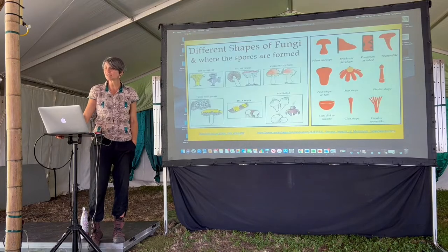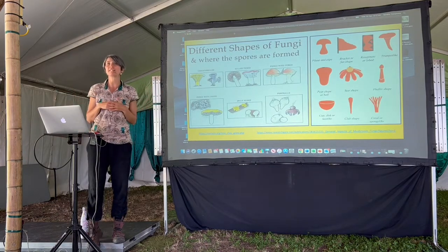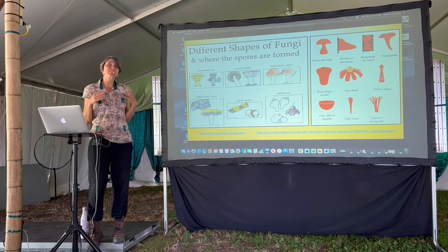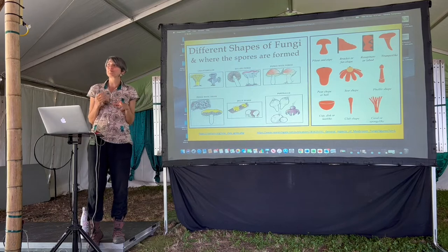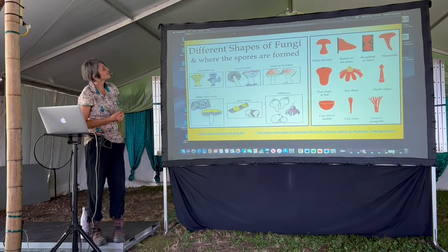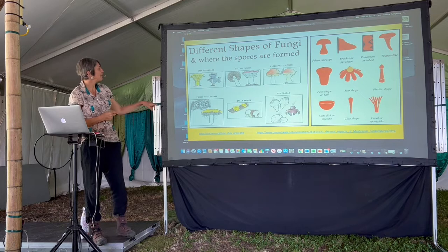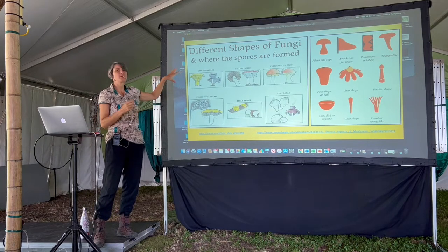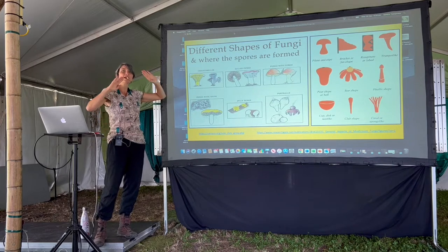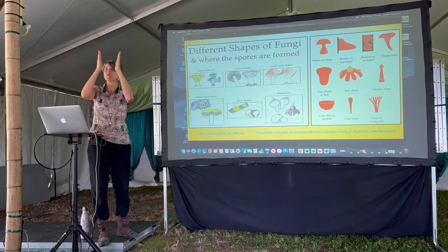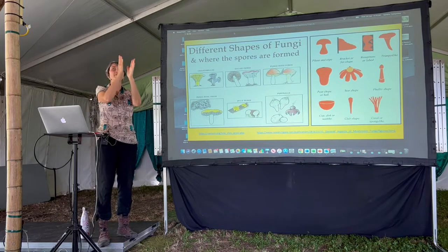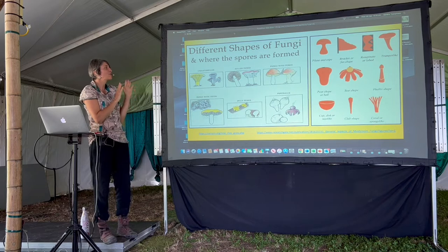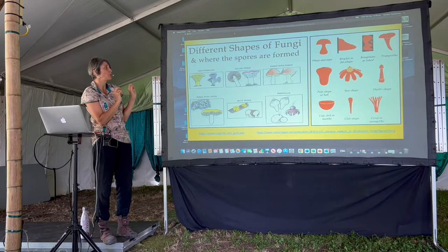We're going to look at the groupings — the basics of fungi ID, like where do they fit in? There are different shapes, and that's good because we can sort of put them into groups based on shapes. They will have a cap, and the cap will have different types of gills. The gill structure is really complex — how close together they are or how far apart — there's so much to understand in their actual structure.